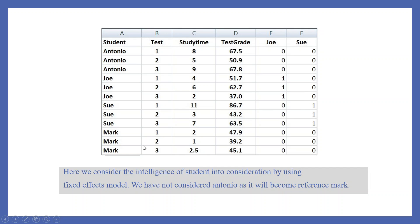We also create a dummy for Mark — it will be 1 where Mark is present, and 0 at the rest of the places. We will not create a dummy for the fourth student because the number of dummies should be 1 less than the number of students — otherwise we fall into the dummy variable trap. So here we consider the intelligence of the students using the fixed effects model.